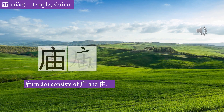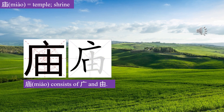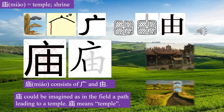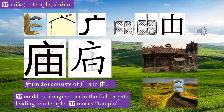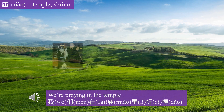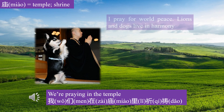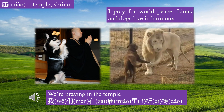Can you fight me? Let's learn character Miào. Miào consists of Guǎng and Yóu. Guǎng, Yóu. Miào could be imagined as in the field, a path leading to a temple. Miào means temple. We are praying in the temple. 我们在庙里祈祷。 I pray for world peace — lions and dogs live in harmony.